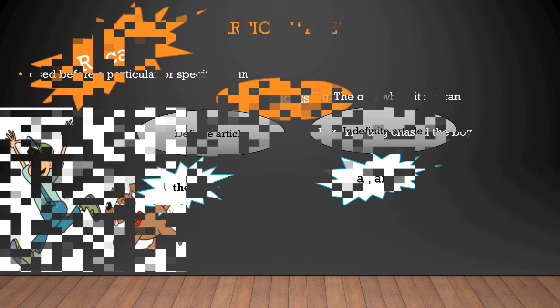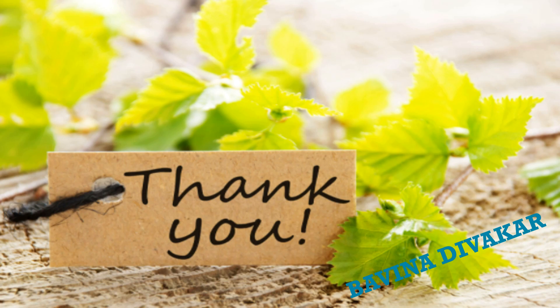So we'll make a short recap of the articles. In articles we have two types: definite article and indefinite article. The definite article, that is the, which denotes specific. And indefinite article, a and an, where a should be addressed in front of the consonant sounds and an should be addressed in front of the vowel sounds. So consonants and vowels all together we have 26 alphabets: 5 vowels and 21 consonants. Thank you, have a nice day.